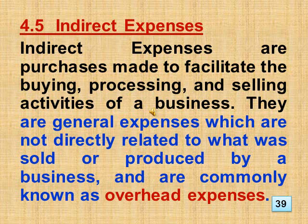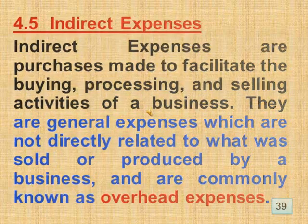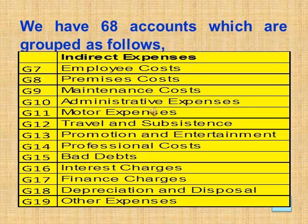Section 4.5 Indirect Expenses. Indirect expenses are purchases made to facilitate the buying, processing, and selling activities of a business. They are general expenses not directly related to what was sold or produced, commonly known as overhead expenses. We have 68 accounts grouped as follows: employee costs, premises costs, maintenance costs, administrative expenses, motor expenses, travel and subsistence, promotion and entertainment, professional costs, bad debts, interest charges, finance charges, depreciation and disposal, plus other expenses.